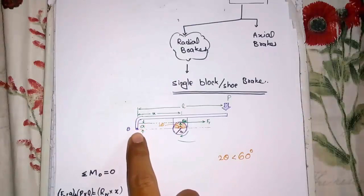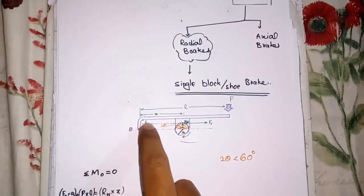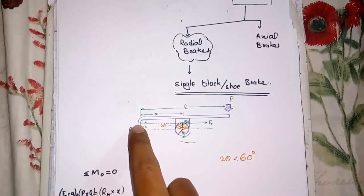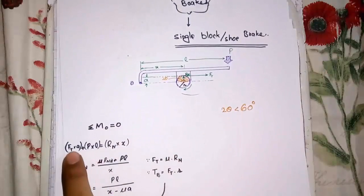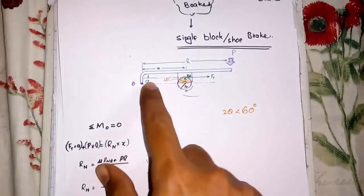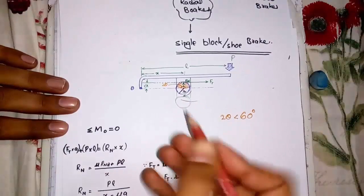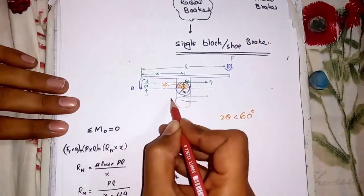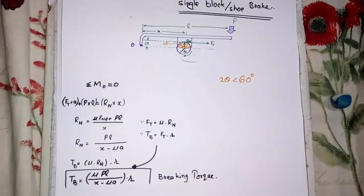Distance A is the perpendicular distance between FT and the fixed point O. There are three cases of A: the A distance may be above pivot point O, as in this case; it may be below pivot point O; or FT may be in the same line as pivot point O. If they are in the same line, then A will be 0. Now let me show you how A will be below pivot point O. The braking torque formula will vary with the variation of A, as the FT into A moment will change its direction.